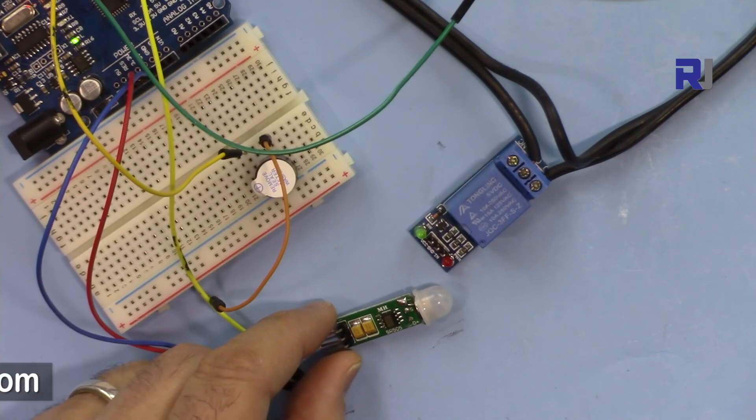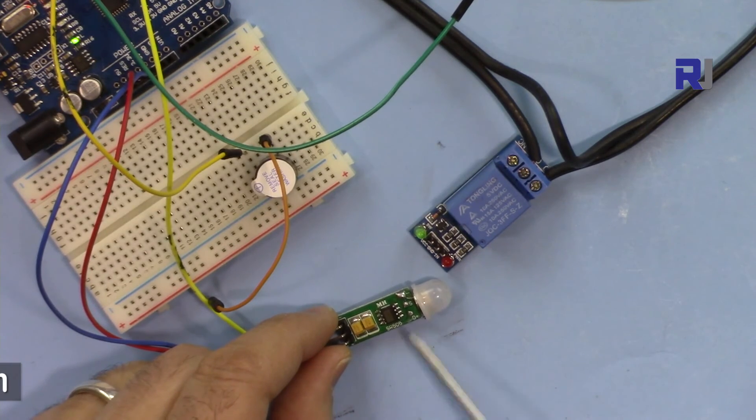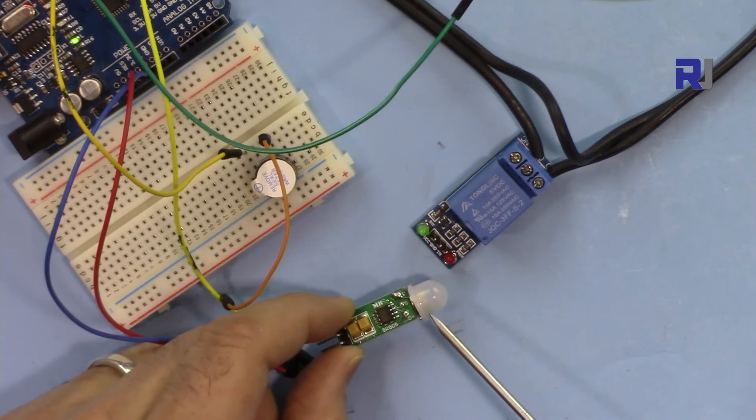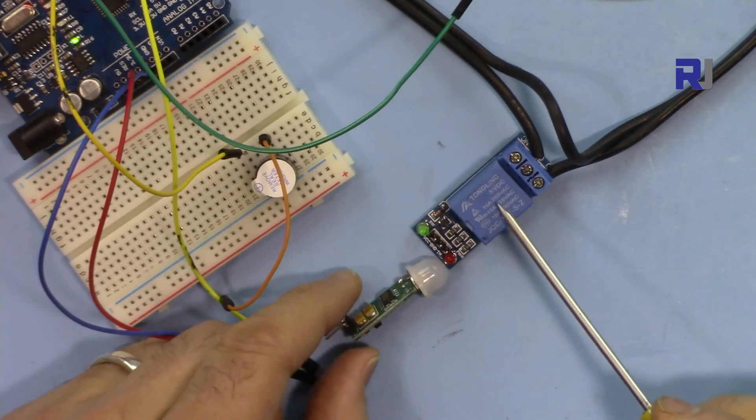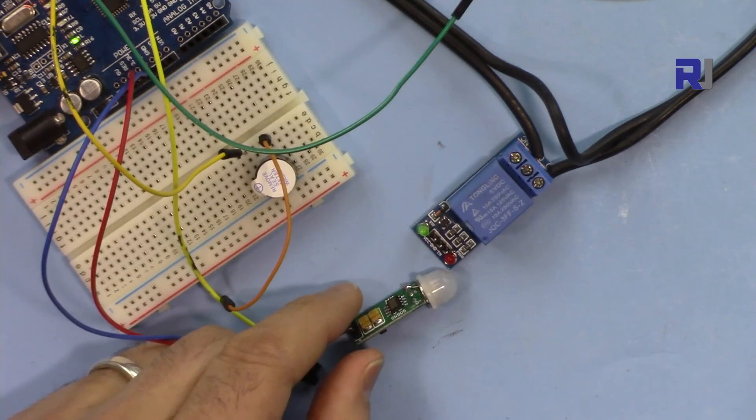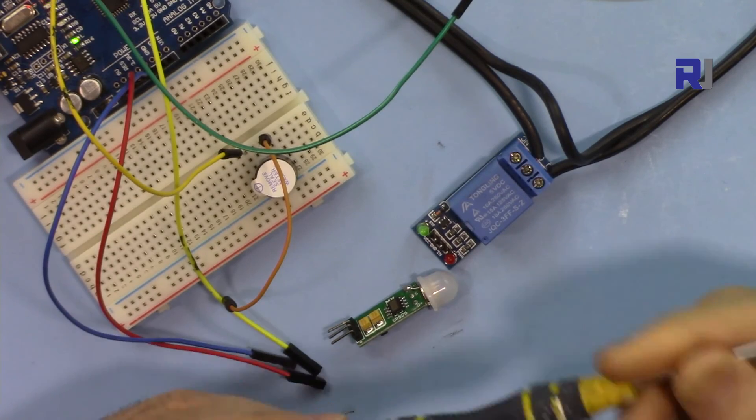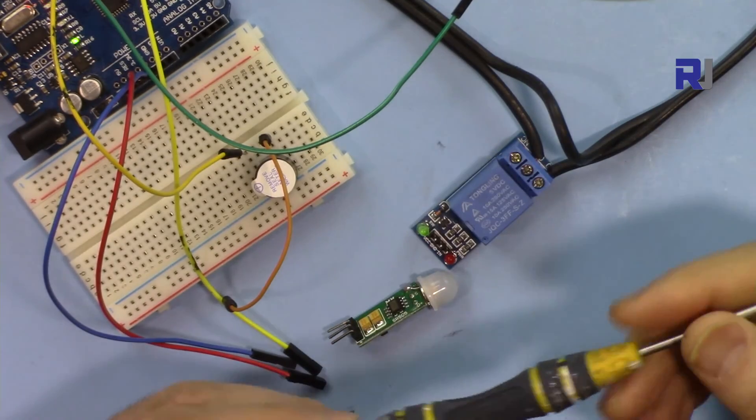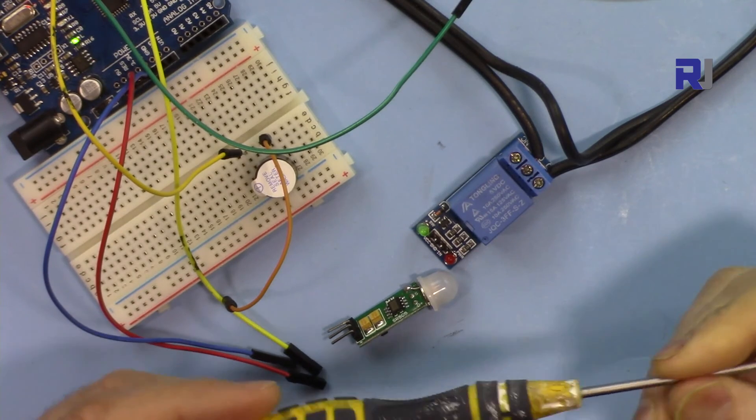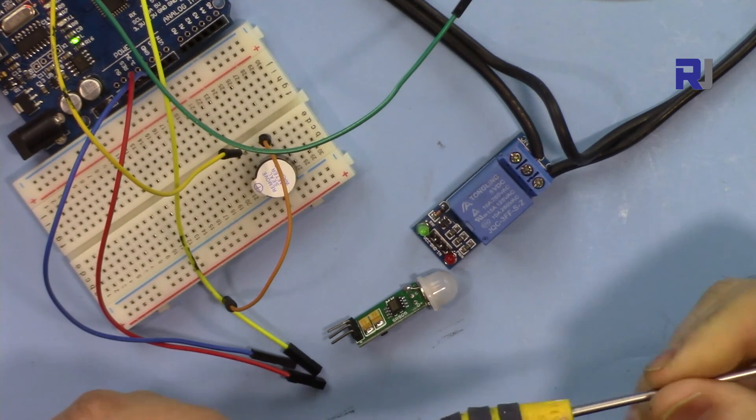This was introduction to HC-SR505 motion sensor module to control a light or something. Thank you for watching. Please thumbs up the video, please share it, and also if you have any question or comments write at the comment section below. I will try to reply and also don't forget to subscribe if you have not done so far.